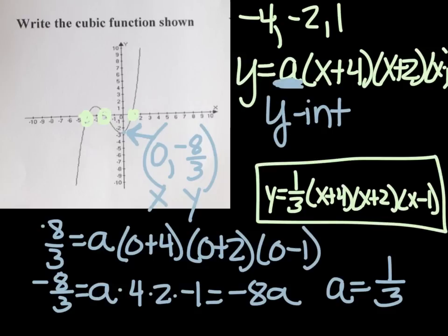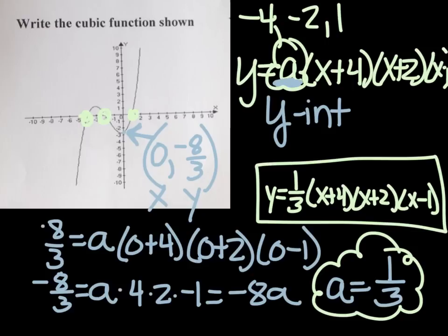So now I can go back and I can write my cubic function. y equals, now I know a is one-third, and then x plus four, x plus two, and x minus one. Now if it just says write the function, you're done. If it says put it in standard form, then lucky you, you get to multiply it all out. But the main thing is finding what the a-value is, not forgetting that there is an a-value in the first place. But that's not going to take it all the way down to this point here. It's going to take it to somewhere else.